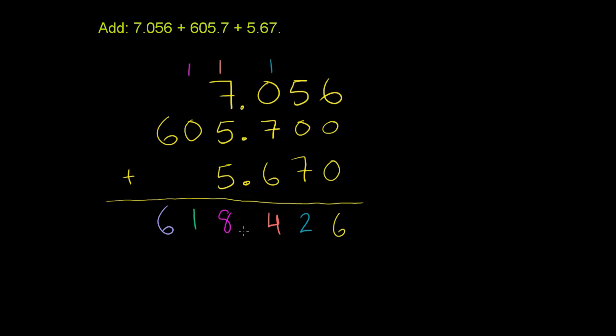And you don't want to forget the decimal. And so when you add the numbers, you get 618.426 or 618 and 426 thousandths. And we're done.